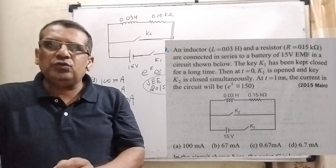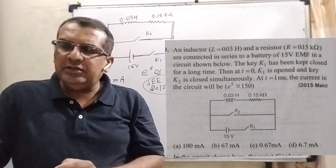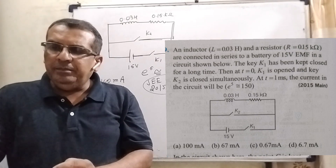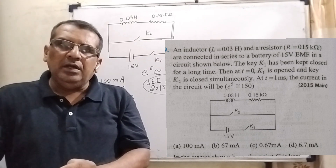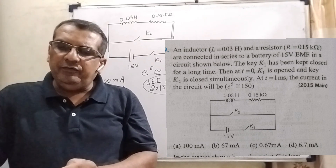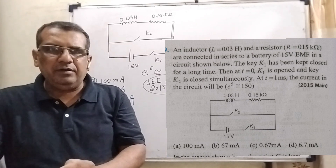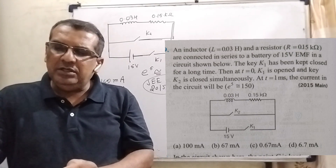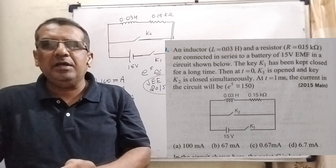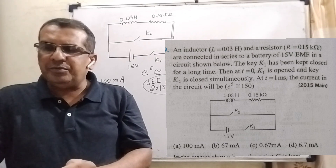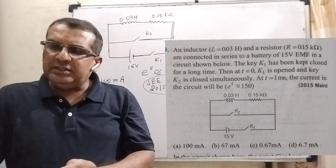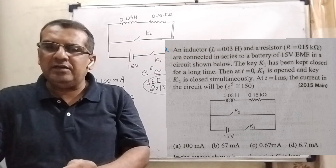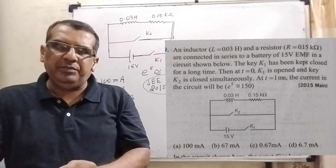We are given that e raised to power 5 is approximately 150. And here we have given four options: Option A — 100 milliampere, Option B — 67 milliampere, Option C — 0.67 milliampere, Option D — 6.7 milliampere.